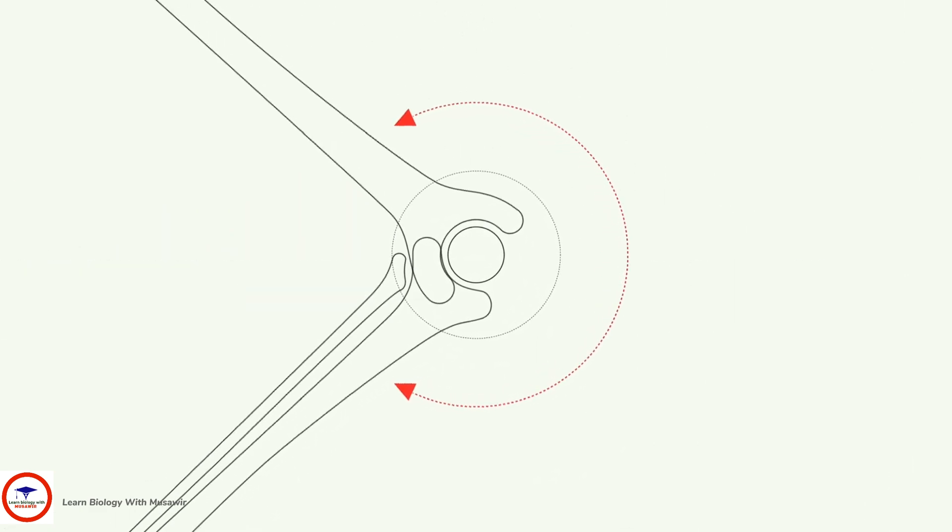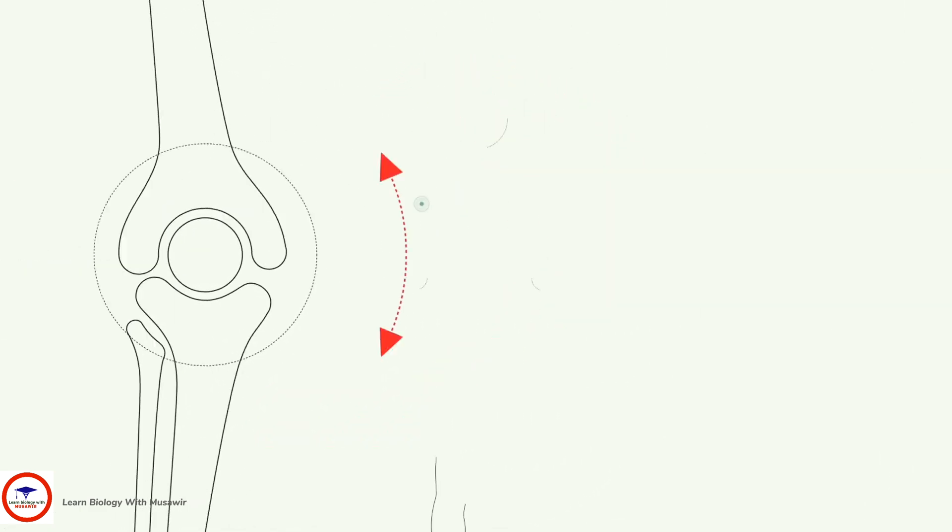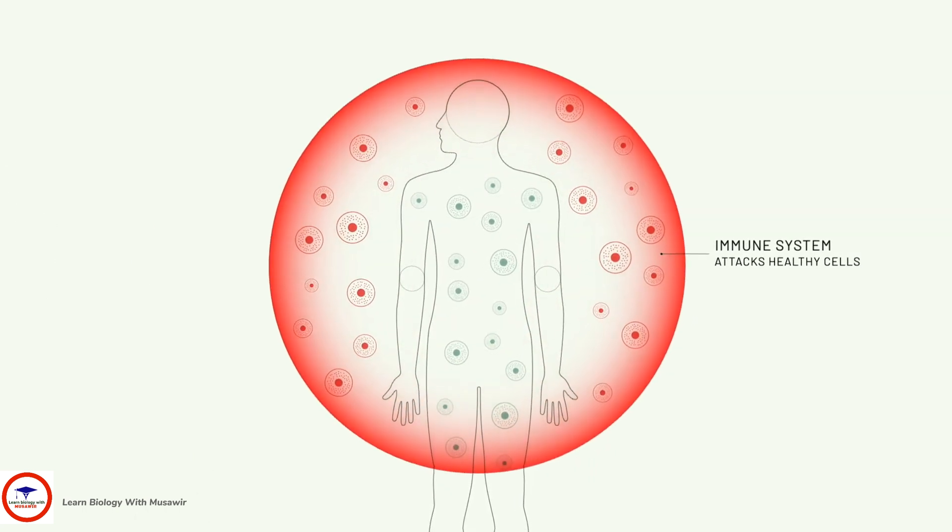Unlike osteoarthritis, which is caused by the wear and tear of joints, RA happens when the immune system malfunctions and attacks healthy cells in the body.